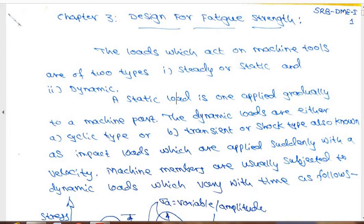Many machine parts which we have already studied are subjected to different kinds of loads. Let us divide the loads: one is a steady or static load and another is a dynamic load. The static load, which we have already studied from the third semester mechanical onwards, includes gradually applied load or load at constant quantity — this is called static type of loading, for which we have made a design analysis earlier.